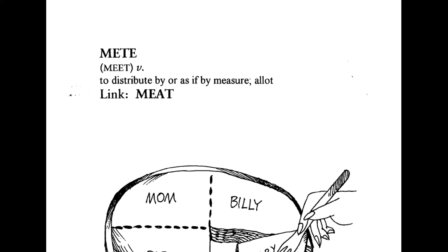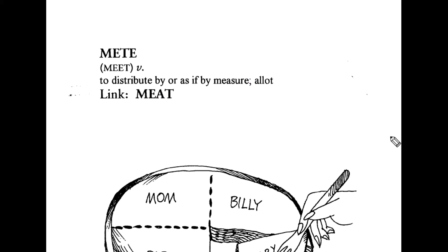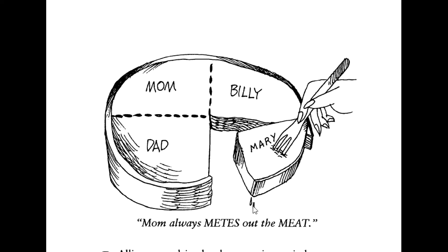So, what is mete? To distribute, as if by measure — a lot. We will link it with the word meat, and it means distributing something. Mom always metes out meat.